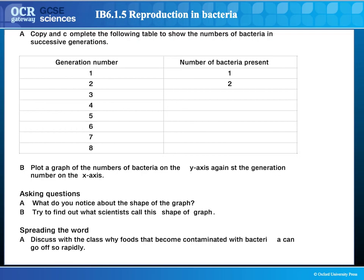Here we can see a table of generation number versus number of bacteria present. We start with one bacterium. At generation two it splits into two; at generation three those two split into four; then eight, 16, 32, 64, and 128 at generation eight. Each generation doubles the amount of bacteria, and this number obviously grows more and more rapidly as generation number increases.